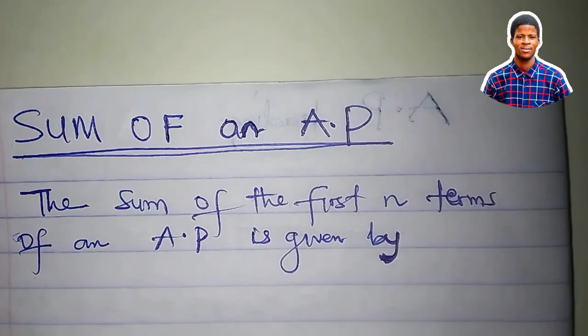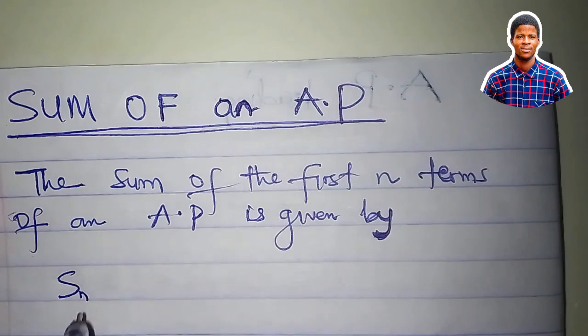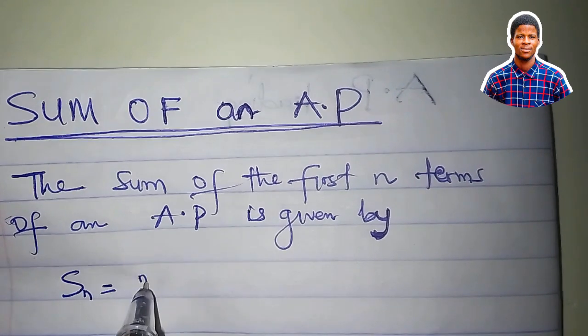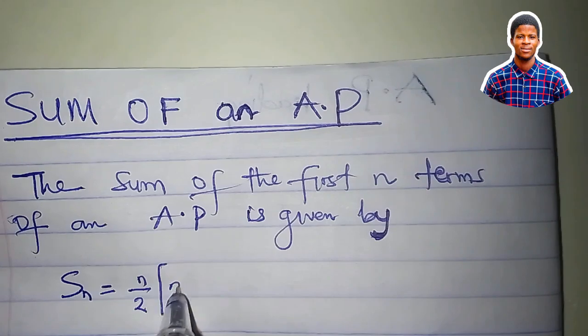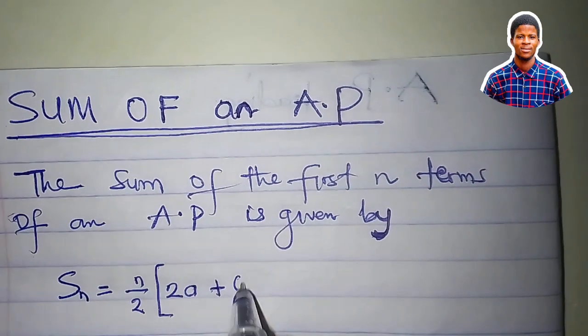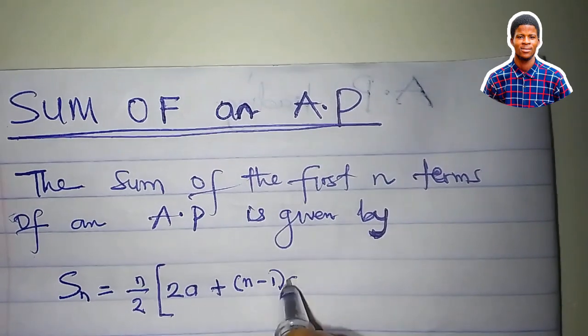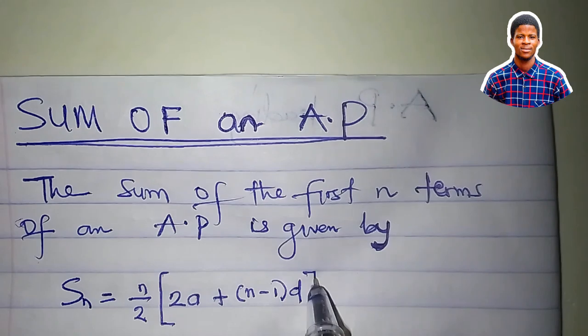is given by the formula S_n equals n over 2, all in brackets, 2a plus (n-1)d, close the brackets.